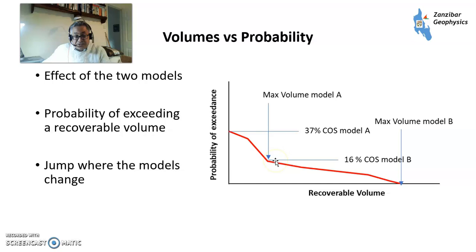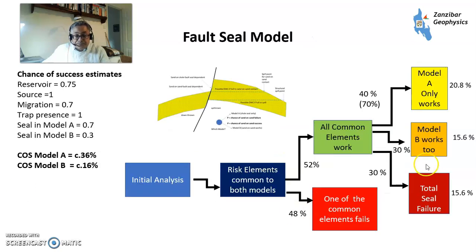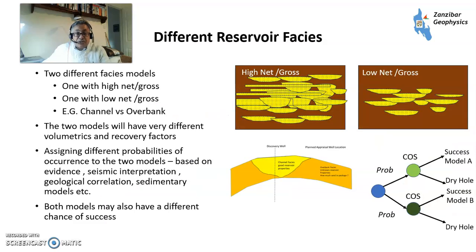When you're doing an analysis of this prospect, you'd assign values to all of these chances of success, and you have expected monetary values — I've got a video on expected monetary values on my channel. Other situations where this could happen would be where you have different reservoir facies, for example a high net-to-gross system or a low net-to-gross system — again, I've got a video on my channel on net-to-gross.